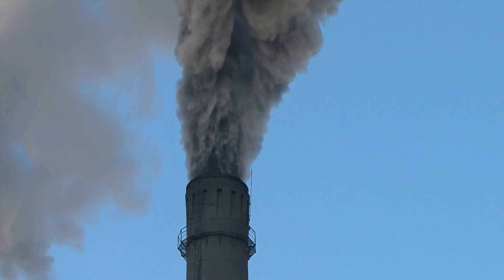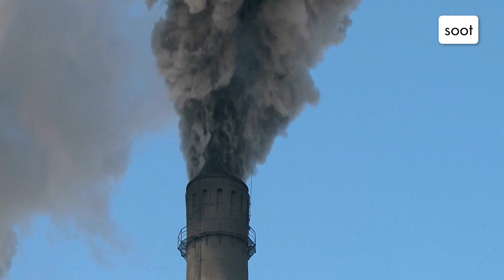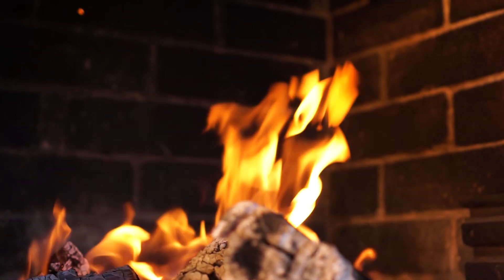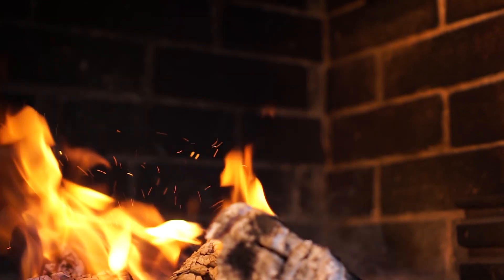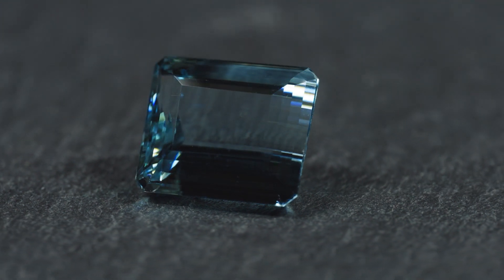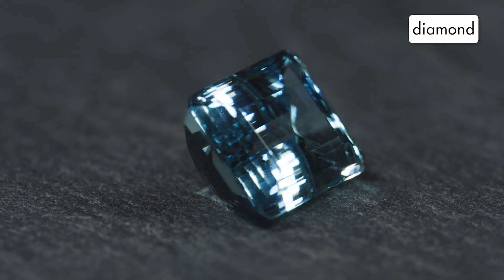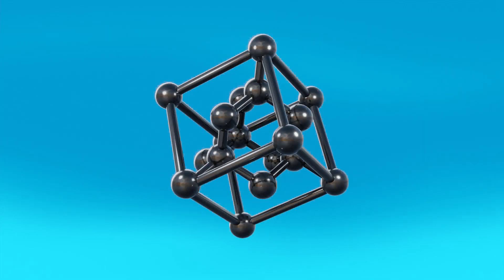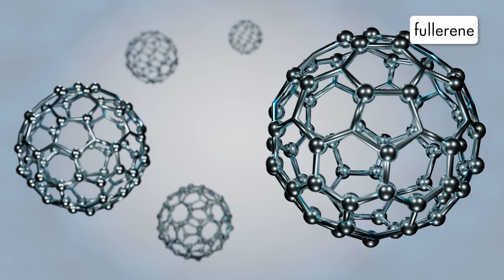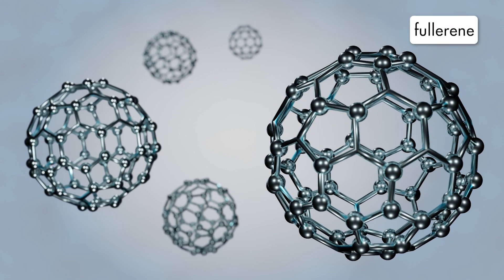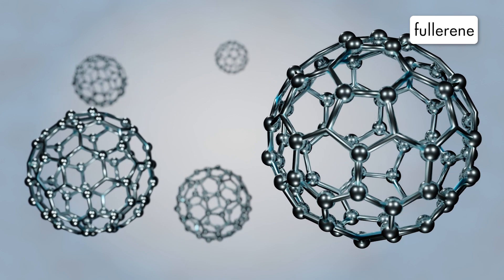One of the most common forms of elemental carbon is soot—the black substance in smoke that sometimes forms when things are burned. Soot consists of carbon atoms with no crystalline structure. Another form of elemental carbon is diamond, formed when carbon is subjected to intense heat and pressure. The carbon atoms in diamond form a strong crystalline structure. Another form of carbon, called fullerene, is rarely found in nature, but it is being synthesized and studied in laboratories for its extremely strong crystal structure.